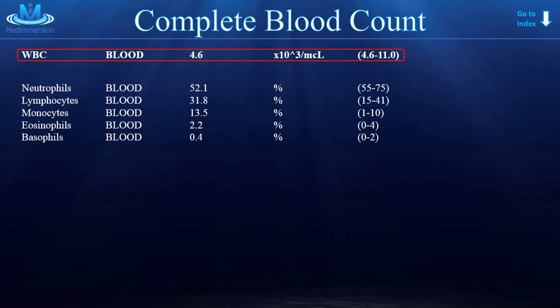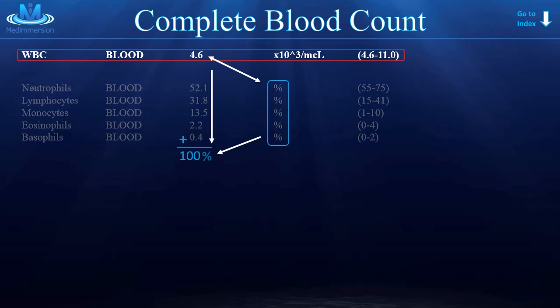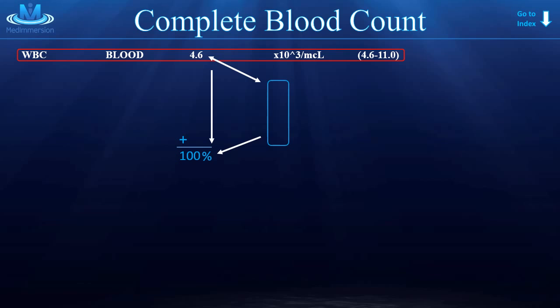What about the next five rows? These next five rows are individual cell types, or cell lines, and they are all white blood cells. You'll notice the units are given as a percentage. So of the 4,600 white blood cells per microliter of blood, 52.1% were neutrophils and 31.8% were lymphocytes, and so on. If you add all those percentages up, they should equal 100%, or the total of 4,600 white blood cells.